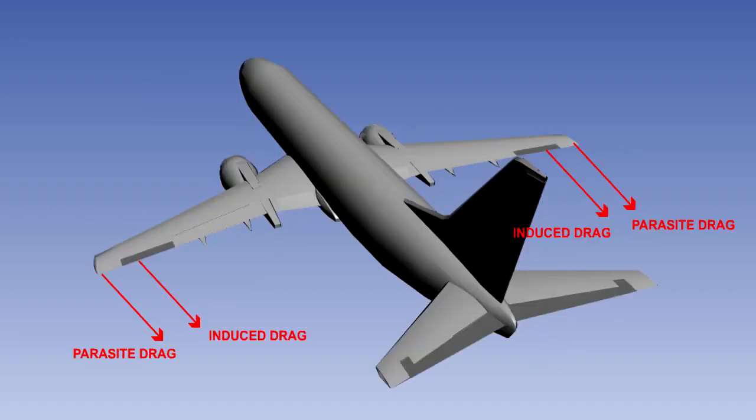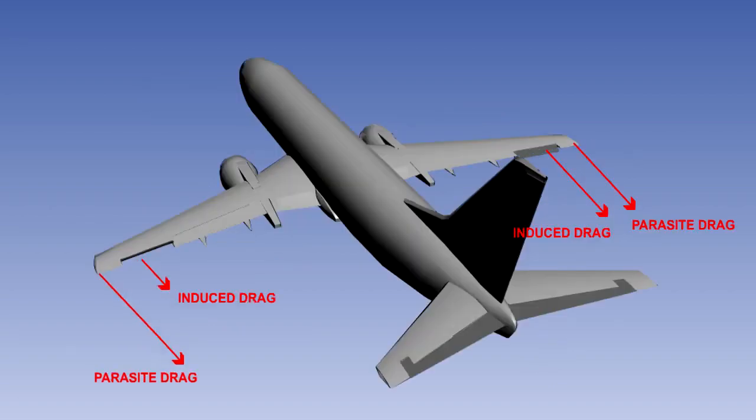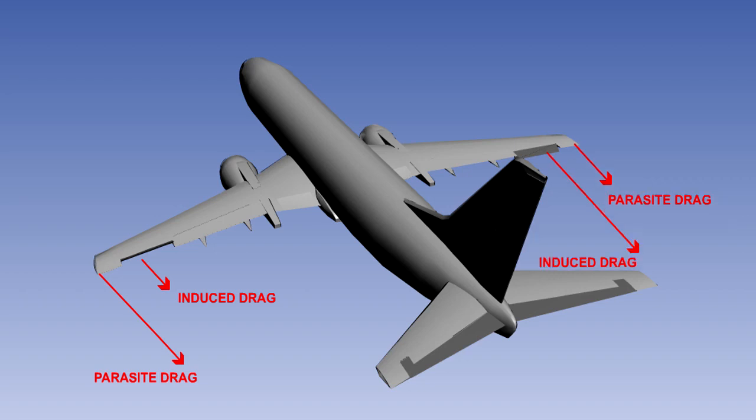There are a number of methods used to counteract adverse yaw, the most popular being differential ailerons. With this system, the up-going aileron moves through a greater angle than the down-going one to equalise the drag on the wing.